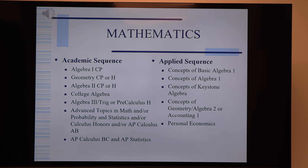Mathematics has two different pathways: a college prep sequence on the left and an applied sequence on the right. Your eighth grade teacher will have scheduled your student for the appropriate math. That doesn't mean a student in the applied sequence can't move to the academic sequence — they just need to prove they can complete the work at a high level and show the work ethic for a recommendation. Remember, students need at least three math credits and likely four. Some of these courses can eventually lead to dual enrollment college credits.